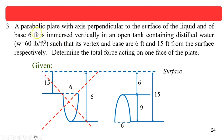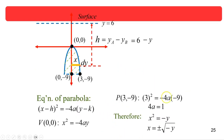Next example: a parabolic plate with its axis perpendicular to the surface of the liquid and a base of 6 feet is immersed vertically in an open tank containing distilled water (density 60 lb/ft³), such that its vertex and base are 6 feet and 15 feet from the surface, respectively. Determine the total force on one face. Since the base is 15 feet and vertex is 6 feet from the surface, the plate spans 9 feet and the parabola opens downward.